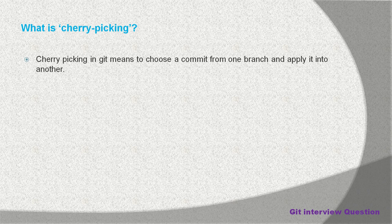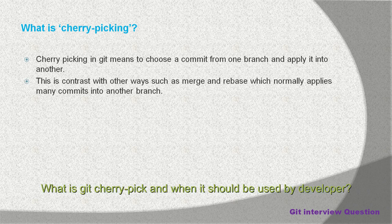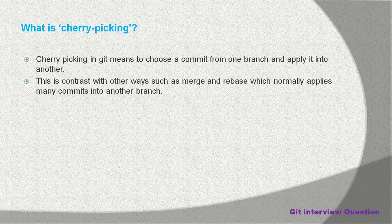Cherry picking in Git means to choose a commit from one branch and apply it into another branch. This is basically in contrast with other ways such as merge and rebase, which normally apply many commits into another branch. When you use git merge or git rebase, you are applying many commits from one branch to another, but with cherry pick you pick a specific commit.